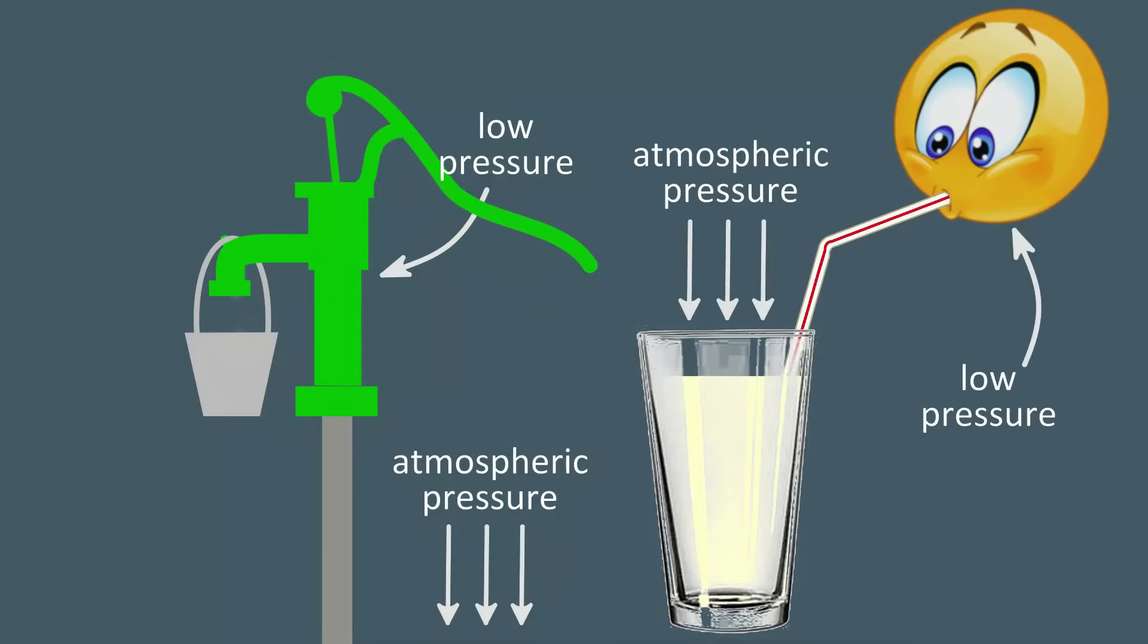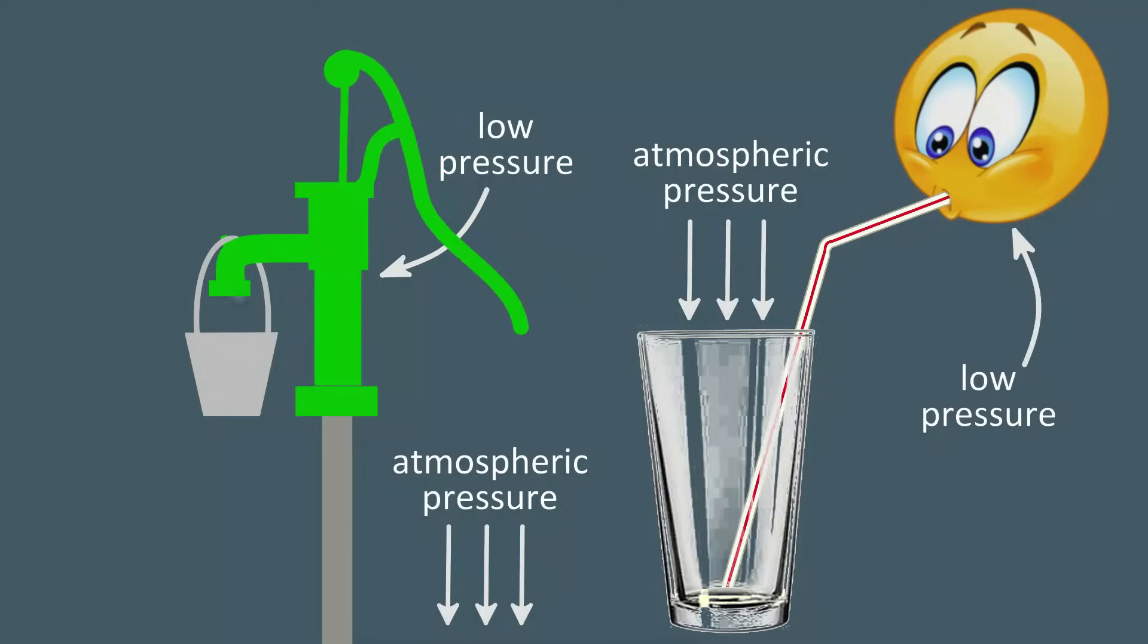Drinking a beverage through a straw works the same way. Sucking on the straw creates a lower pressure in the mouth, allowing the higher pressure of the atmosphere to push the liquid up the straw.